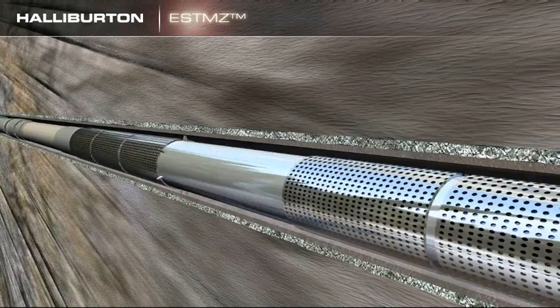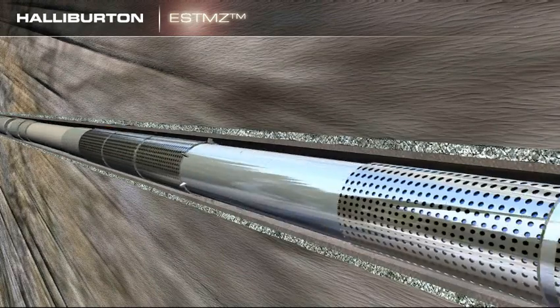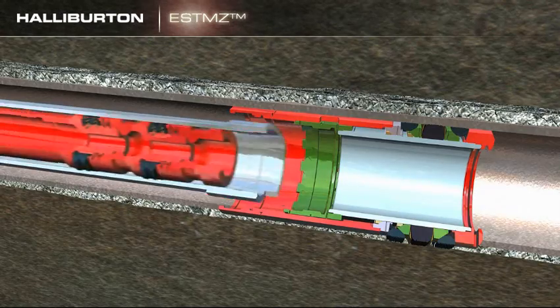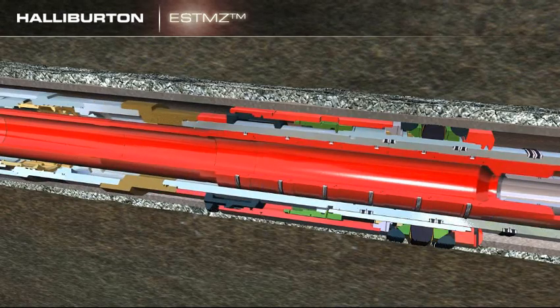The entire assembly is run in the well on the work string. Once on bottom, the end of the ESTMZ completion assembly is stung into the sump packer.